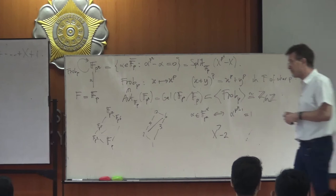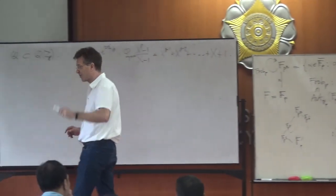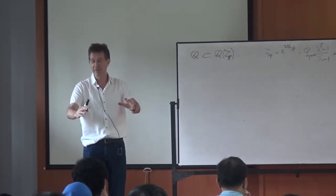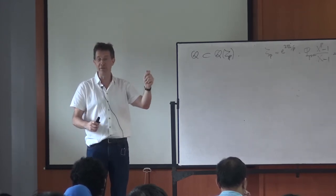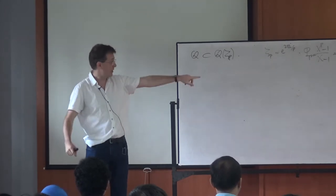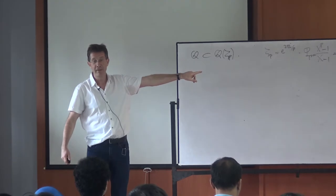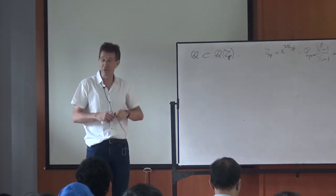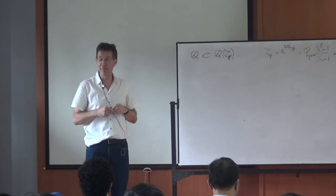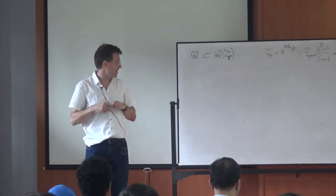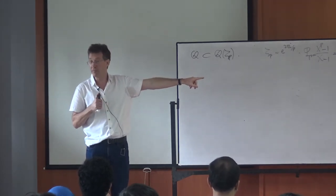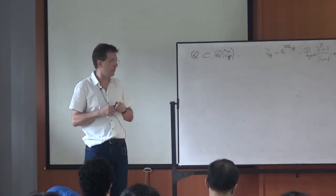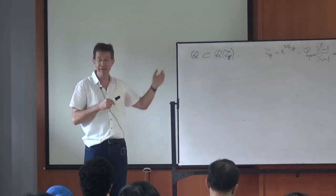Eisenstein doesn't seem directly applicable to Φ_p since all coefficients are 1. But there is a trick: substitute x + 1 into Φ_p. Then Φ_p(x+1) = ((x+1)^p − 1)/x. This is a polynomial whose constant coefficient vanishes when you divide by x. Going mod p, only x^{p−1} survives at the top, and all middle terms involve binomial coefficients divisible by p.